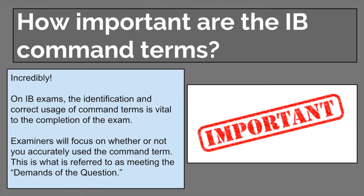On the IB exams, the identification and correct usage of command terms is vital, and if you don't do it effectively, you're going to be marked down. Examiners are going to focus on whether or not you're accurately using the command term — this is what is referred to as meeting the demands of the question. If it says you need to justify and you're not justifying, you're going to get marked down. Being able to identify them and know what you need to do for each one is very important.